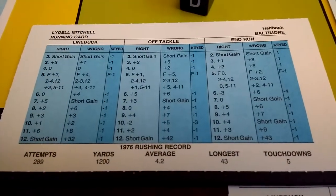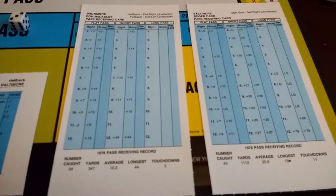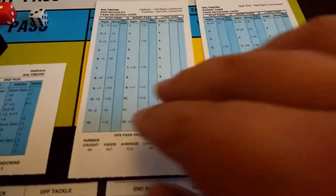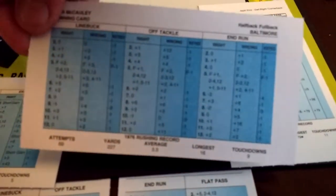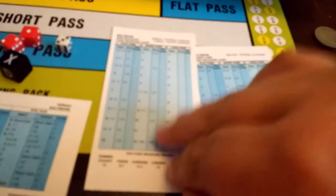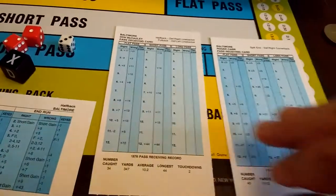We're using the '76 Colts by the way. And they didn't have any receivers that could do this, so I'm just going to use another running back as an example. If you have a receiver that has running on the back of their card, then they can run in those particular plays. If you have a receiver with a backside blank, they cannot participate in any running plays.